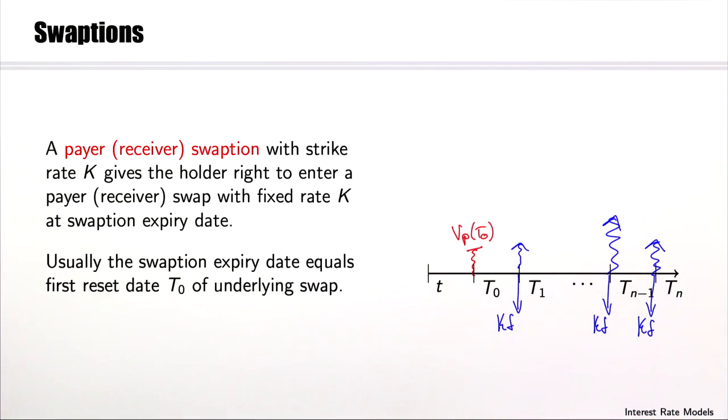This leads to a value of this swap at time T0 that can be positive or negative. You will exercise the swaption at expiry date T0 only if this value is positive.